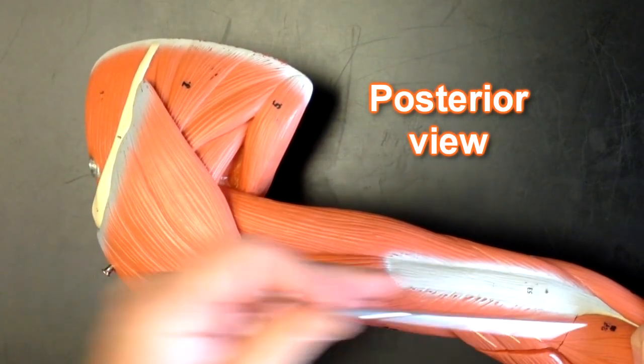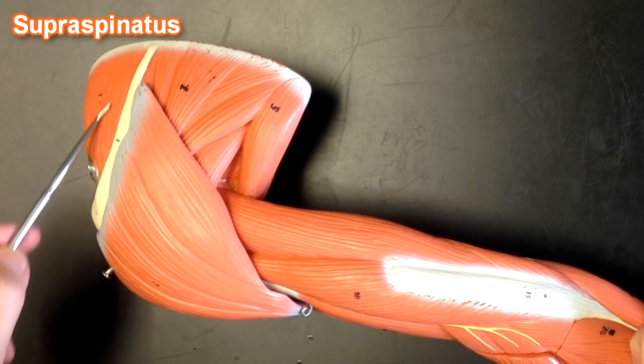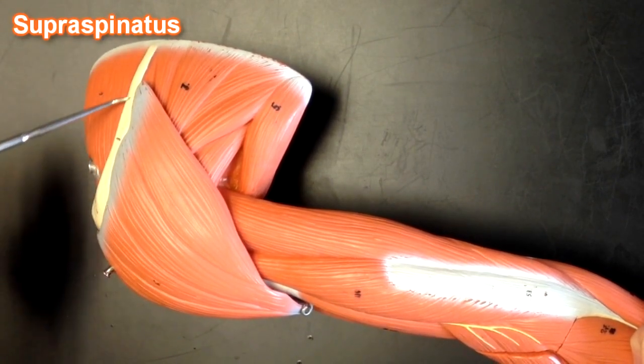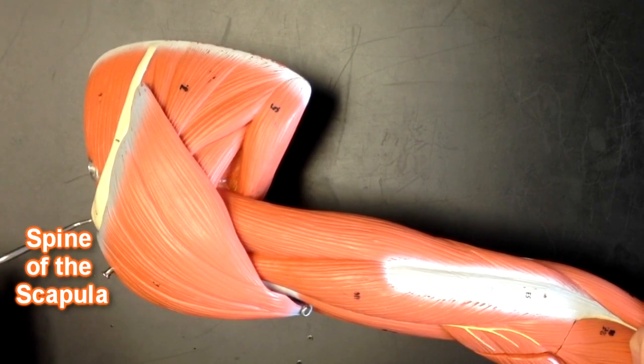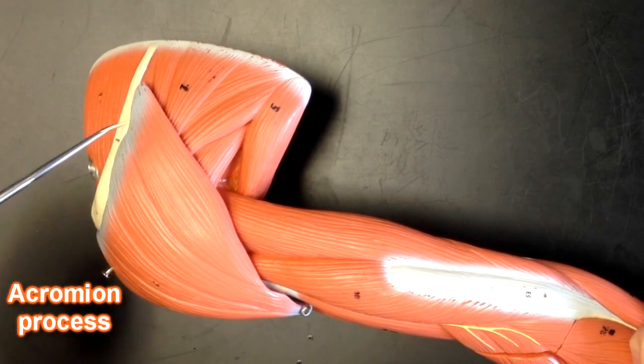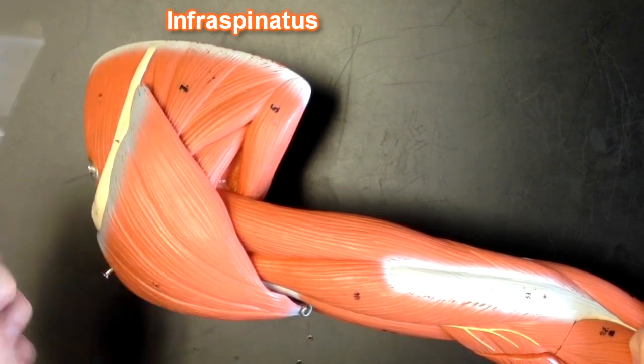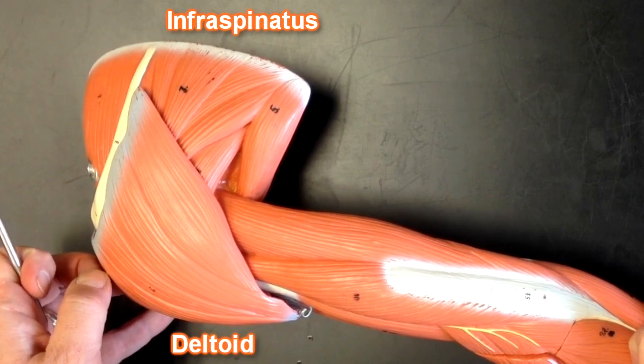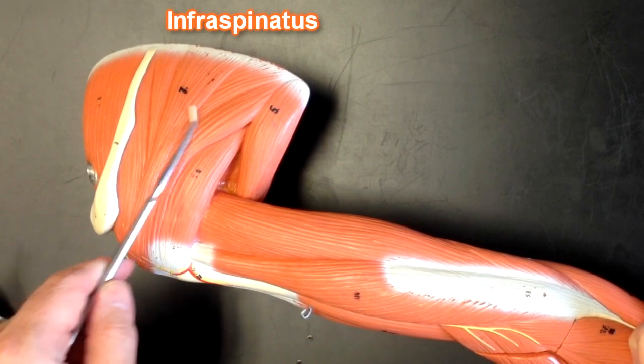On the posterior aspect we would be able to see our supraspinatus right here. This would be the spine of the scapula right here leading to the acromion process. This muscle right here would be the infraspinatus muscle. If I were to remove the deltoid muscle right here we could see the infraspinatus.